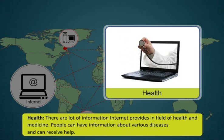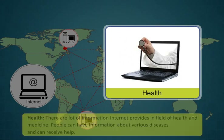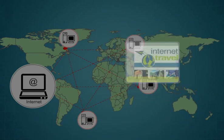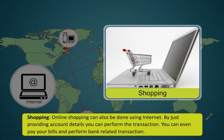People can get information about various diseases and can receive help. One can use the internet to gather information about various tourist places. It can be used for booking holiday tours, hotels, train and flights. Online shopping can also be done using the internet. By just providing account details, you can perform the transaction.